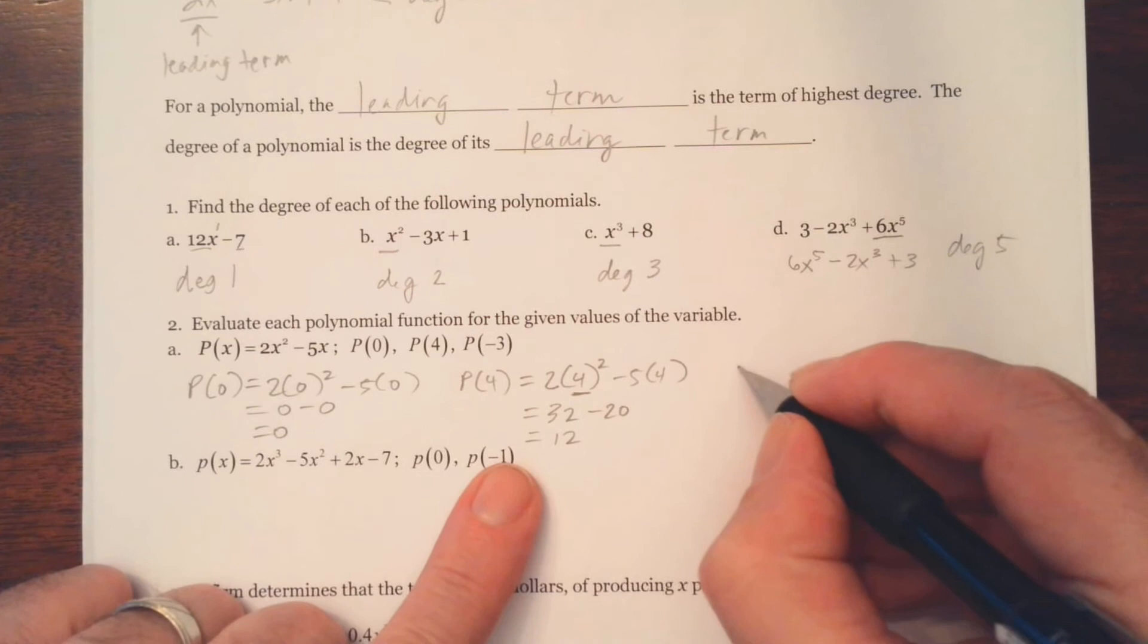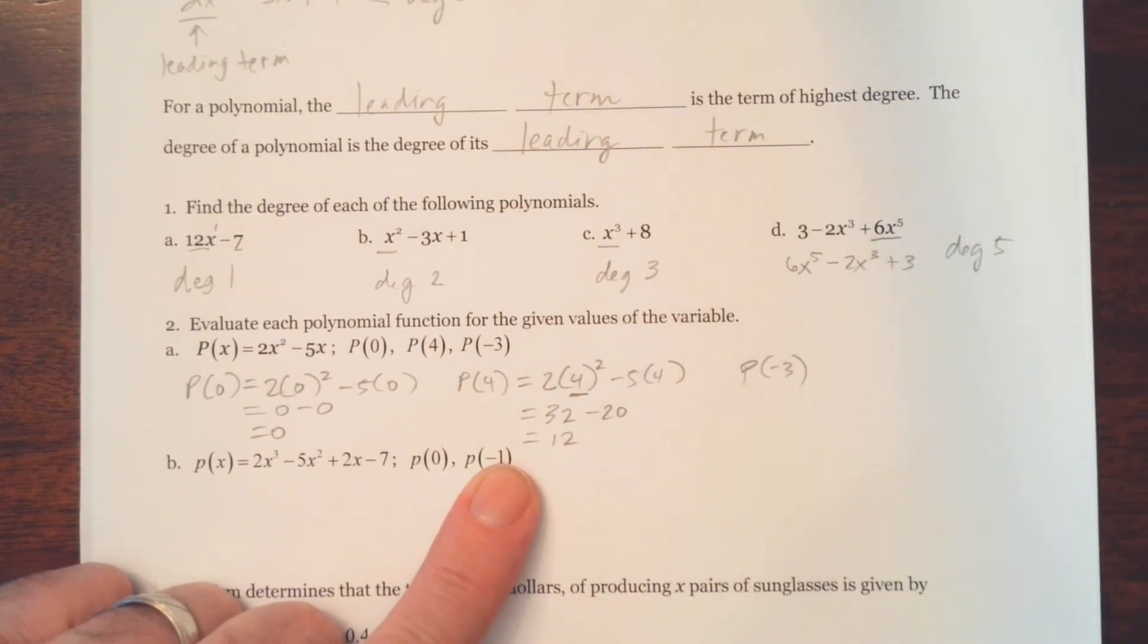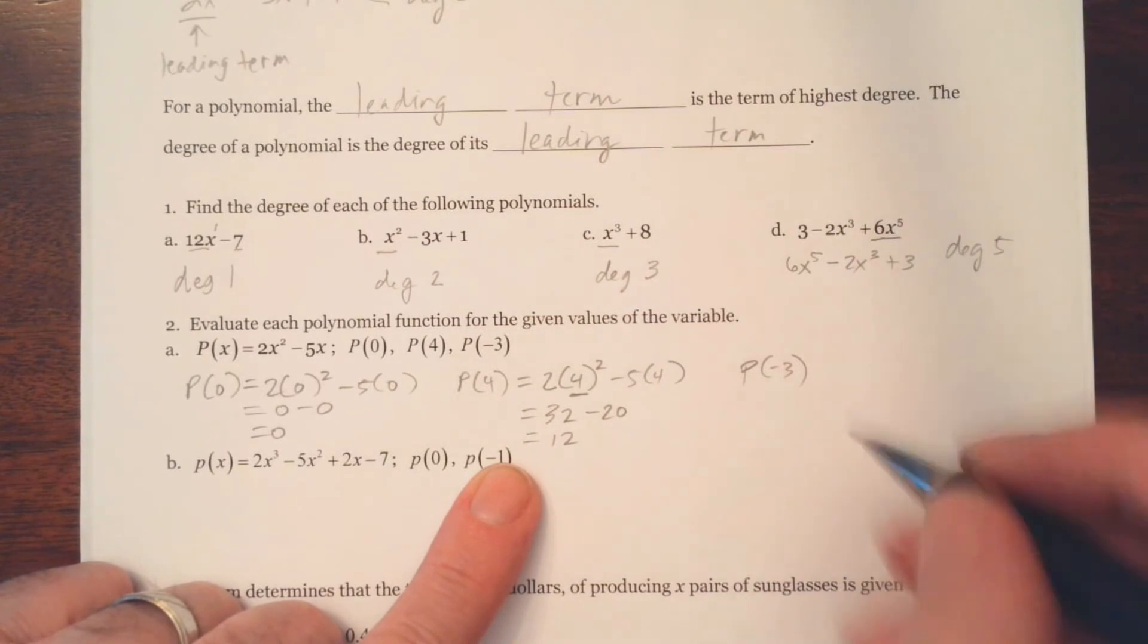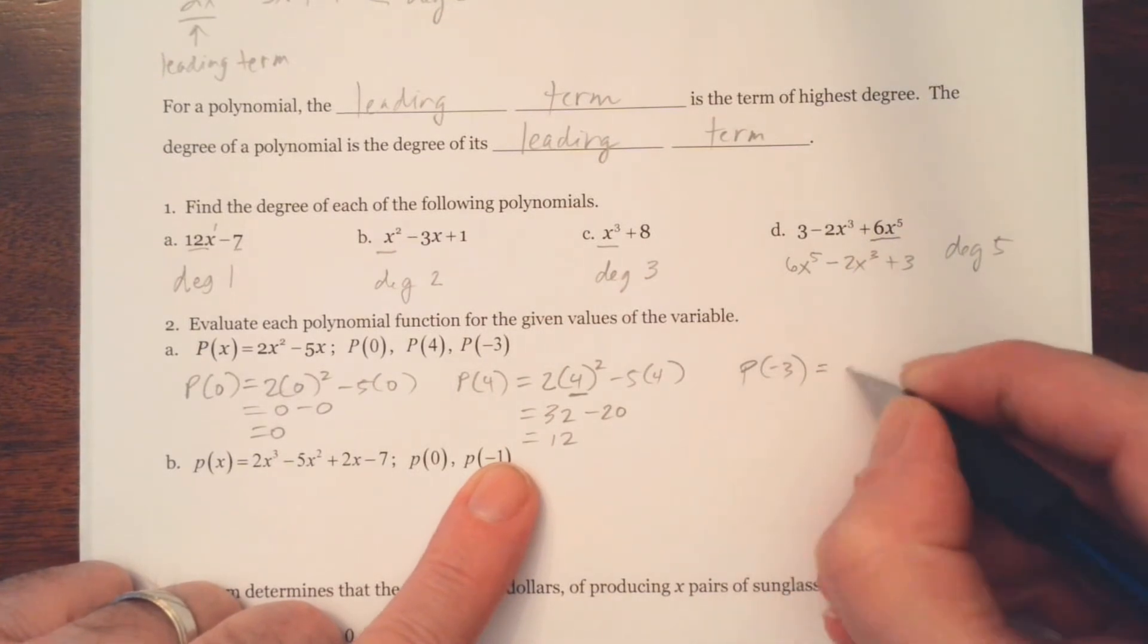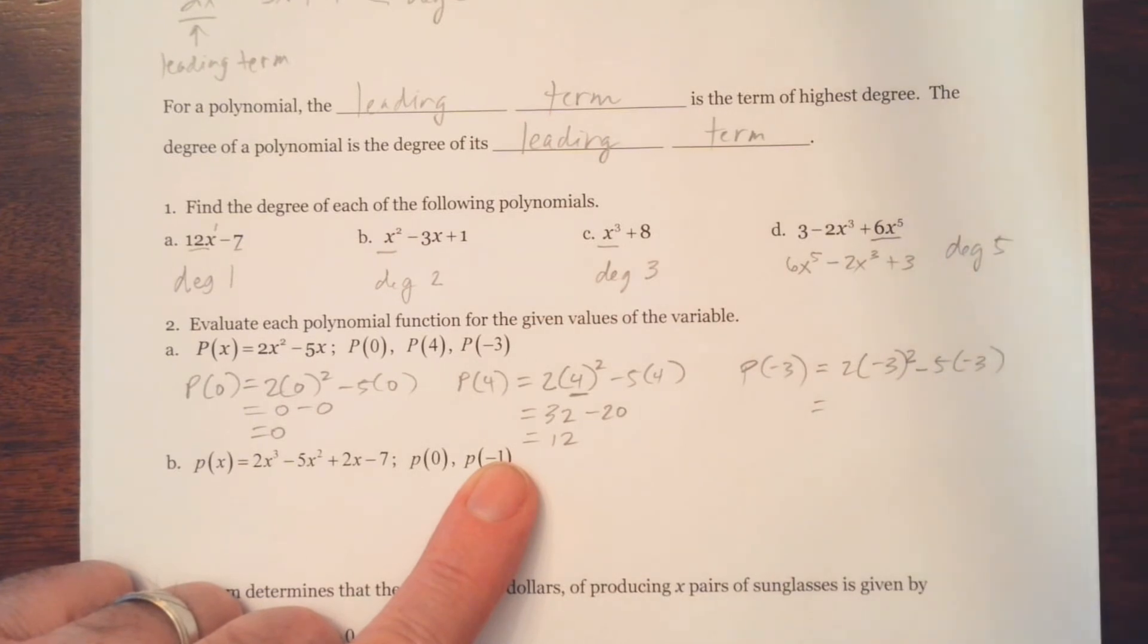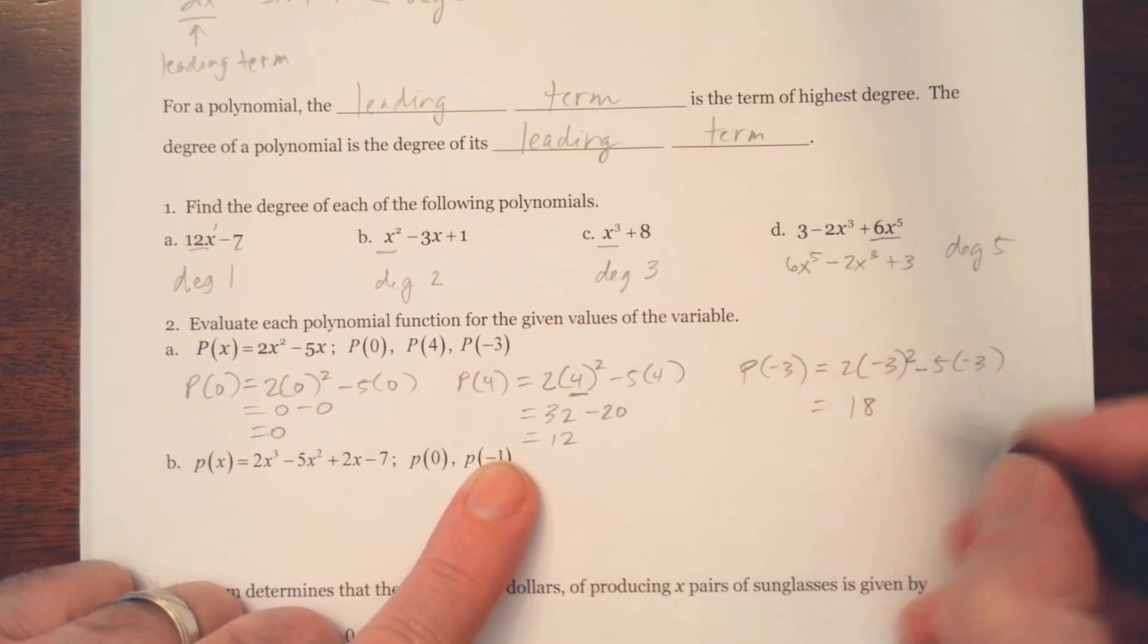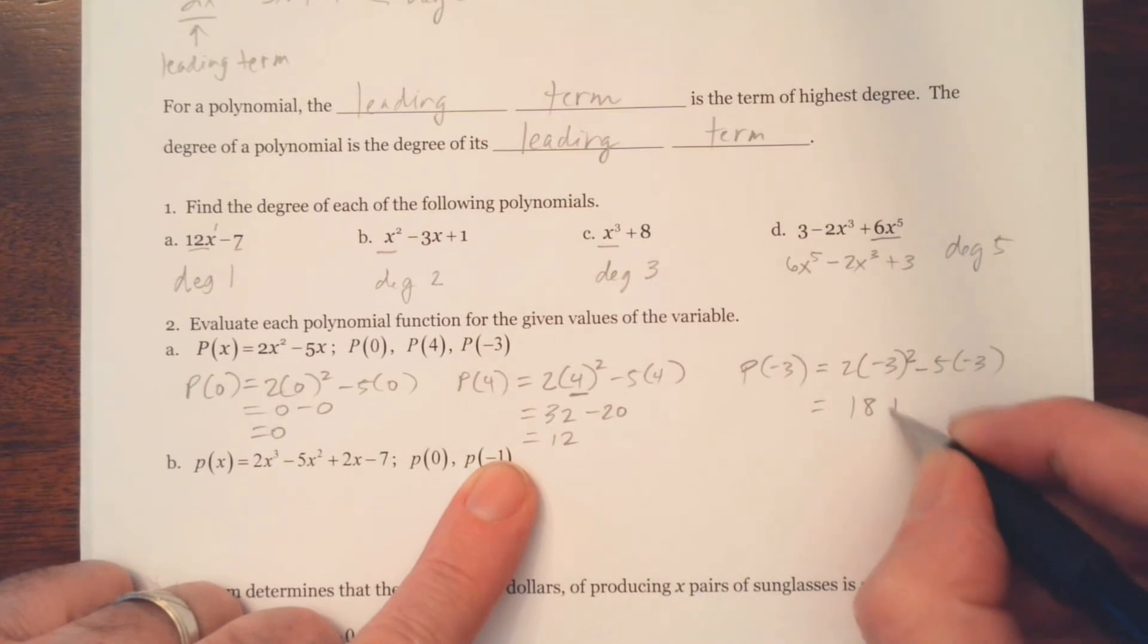Alright, and the last one, p of negative 3. If you haven't already tried it, you might want to go ahead and stop the video and give it a shot. So we've replaced all our x's with negative 3. When you square any number, you're always going to get a positive. Negative 3 times negative 3, we get 9 times 2, which is 18. And this will be plus 15. And so we're going to get 33.